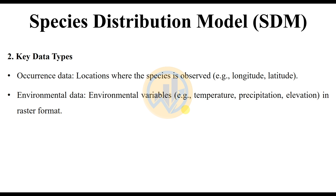The key data types for a Species Distribution Model are: occurrence data — locations where the species is observed, for example latitude and longitude — and environmental data — environmental variables such as temperature, precipitation, and elevation in a raster format.